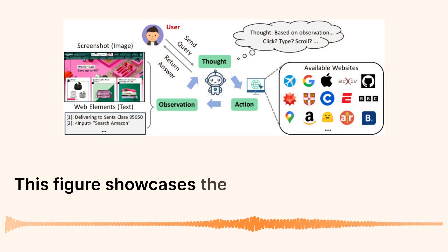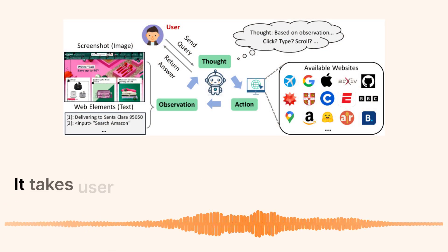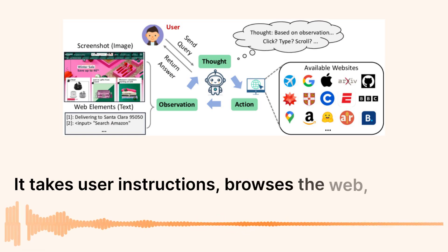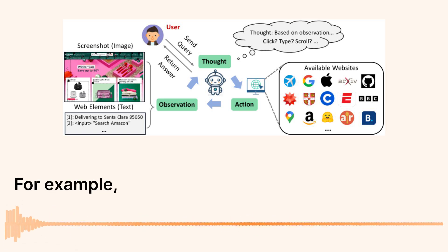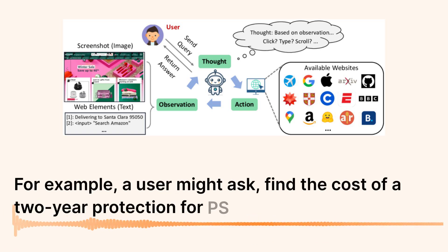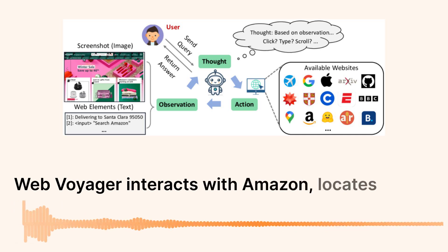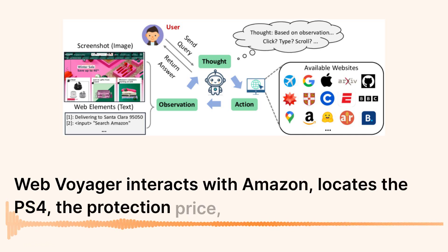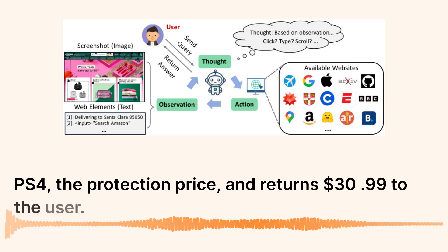This figure showcases the overall workflow of Web Voyager. It takes user instructions, browses the web, and returns the answers. For example, a user might ask: find the cost of a two-year protection for PS4 on Amazon. Web Voyager interacts with Amazon, locates the PS4, identifies the protection price, and returns $30.99 to the user.